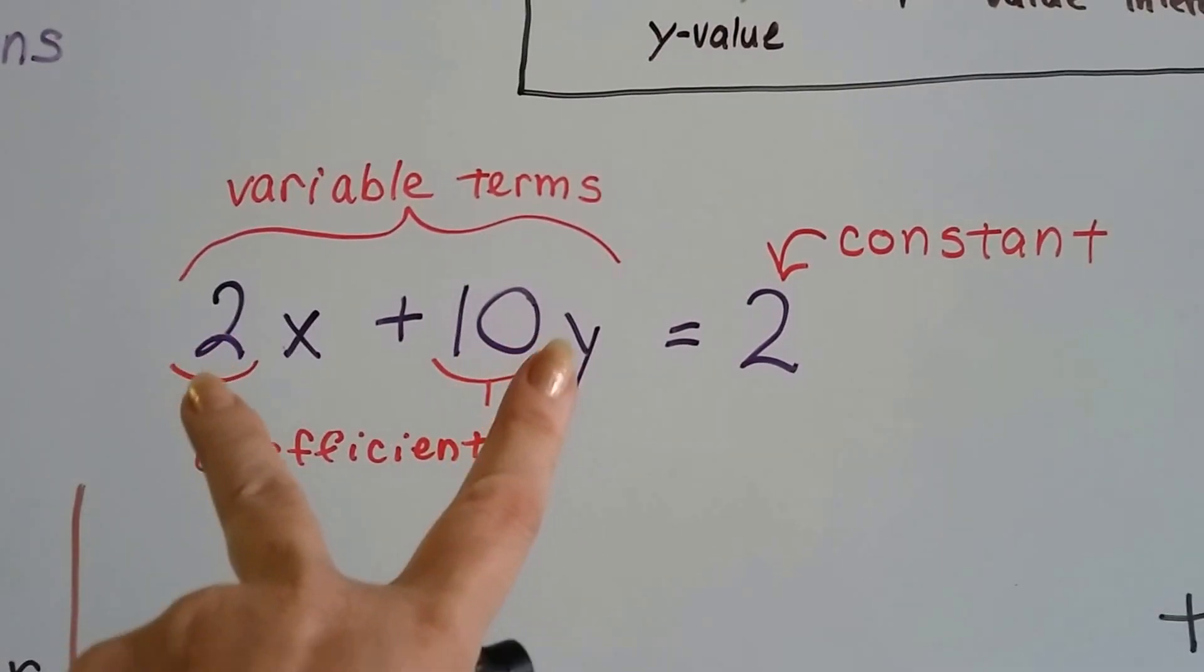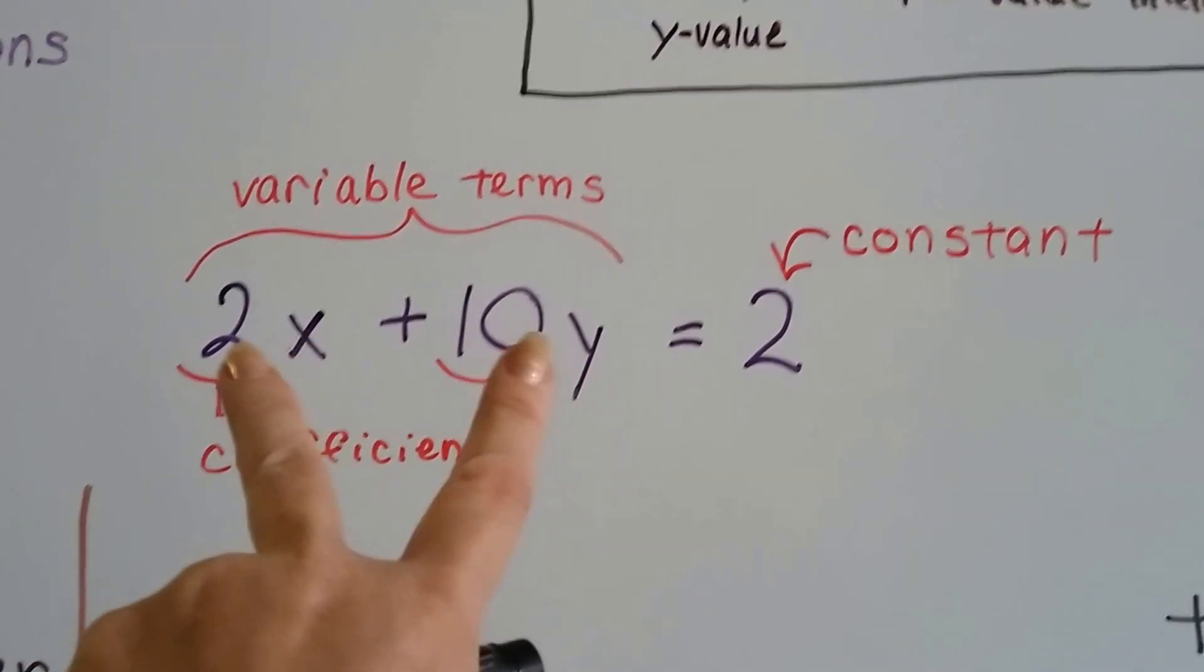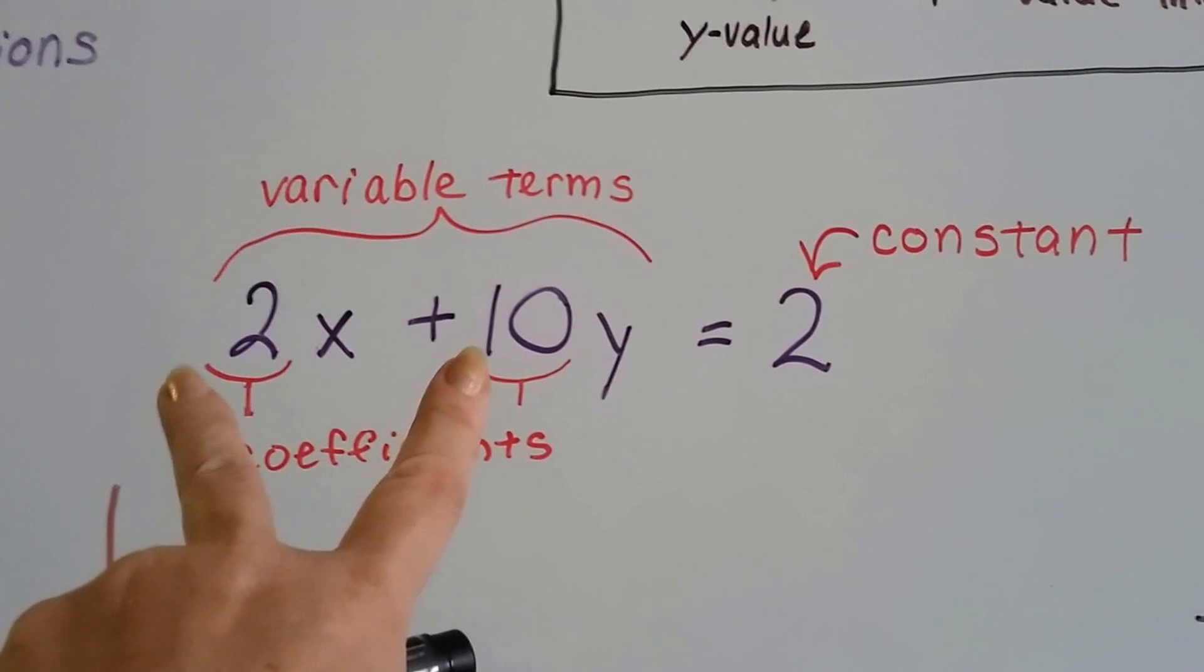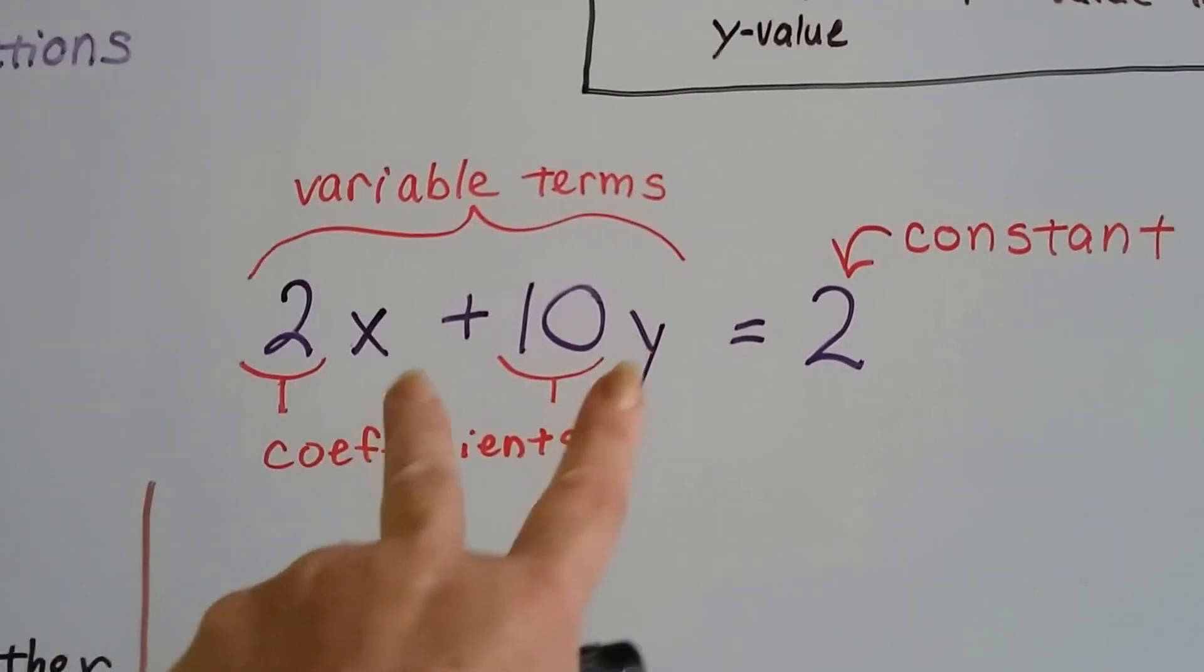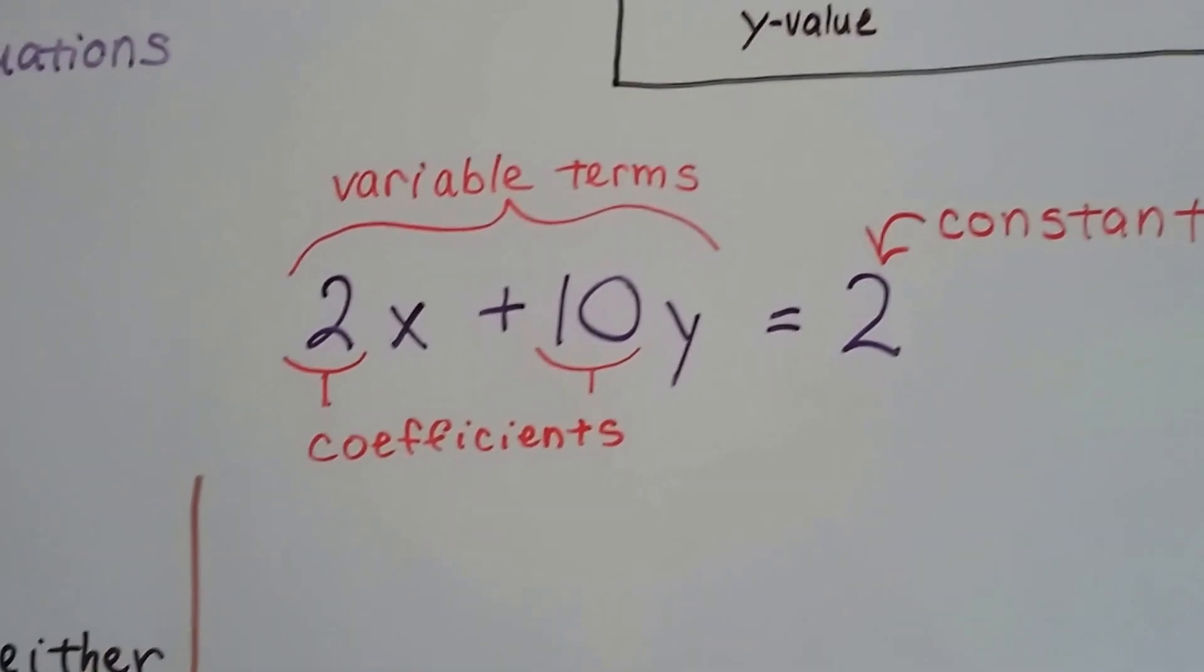These are variable terms because they have a variable in them. And this number in front of the variable, these are the coefficients.